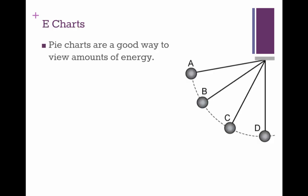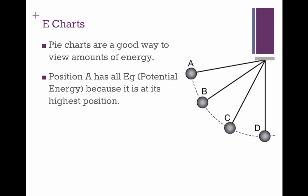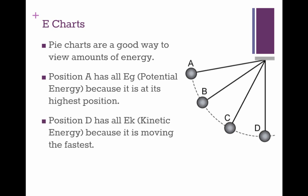So energy charts. Pie charts are a really good way to view the amounts of energy, because they represent absolutely all the energy that there is. Position A is all Eg potential energy, because it's at its highest point and it's not moving. D is all kinetic energy, because it's at its lowest point and it's moving at its fastest speed.